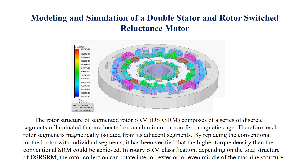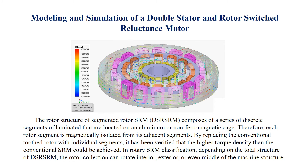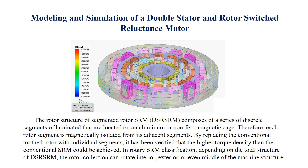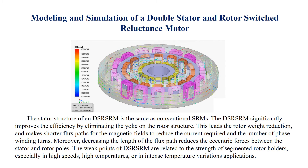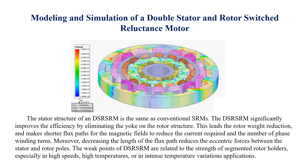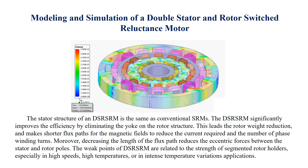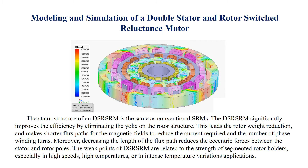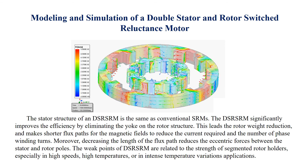In rotary SRM classification, depending on the total structure of DS-SRM, the rotor collection can rotate interior, exterior, or even in the middle of the machine structure. The stator structure of a DS-SRM is the same as conventional SRM. The DS-SRM significantly improves efficiency by eliminating the yoke on the rotor structure. This leads to rotor weight reduction and makes shorter flux paths for the magnetic fields to reduce the current required in the number of phase winding turns.